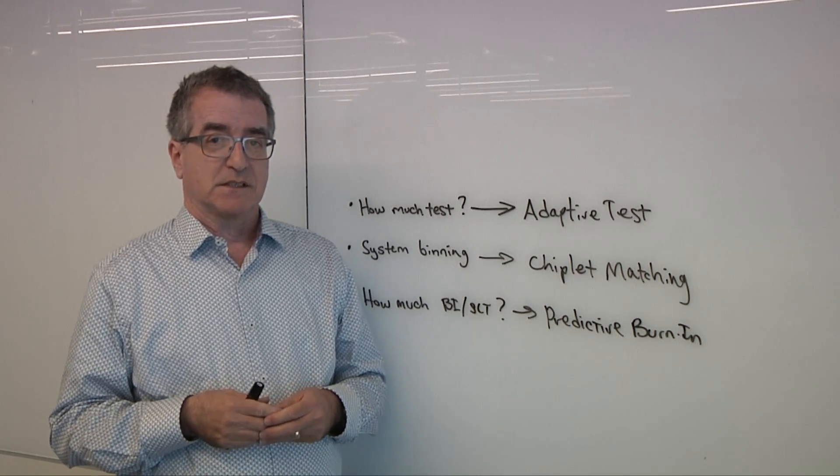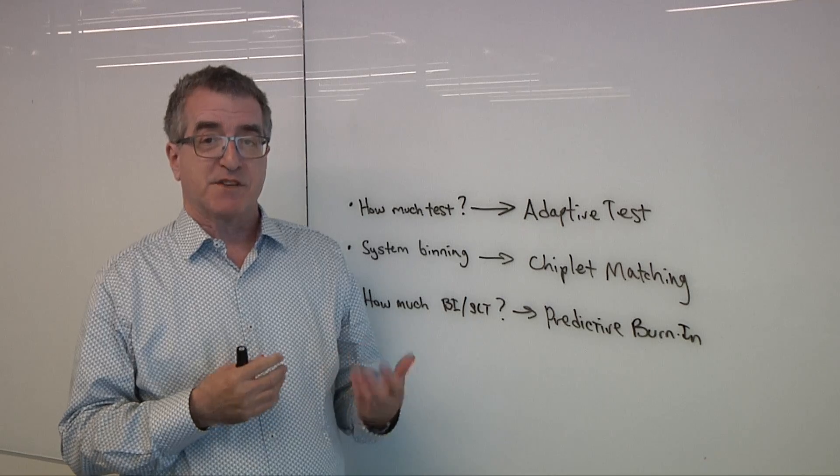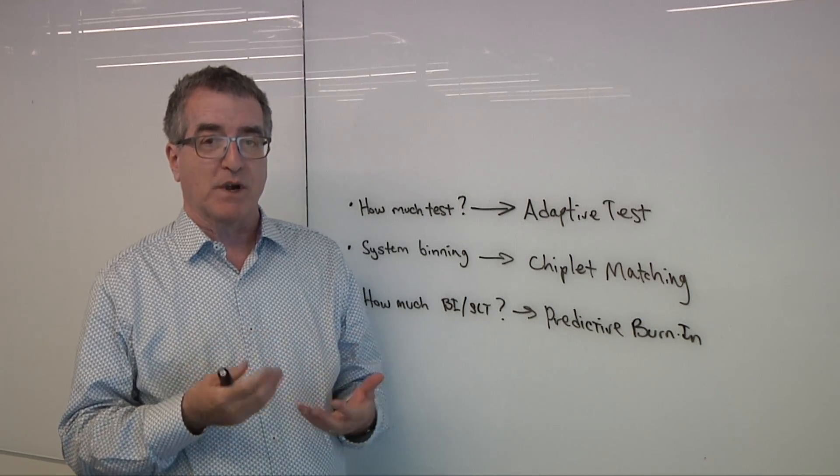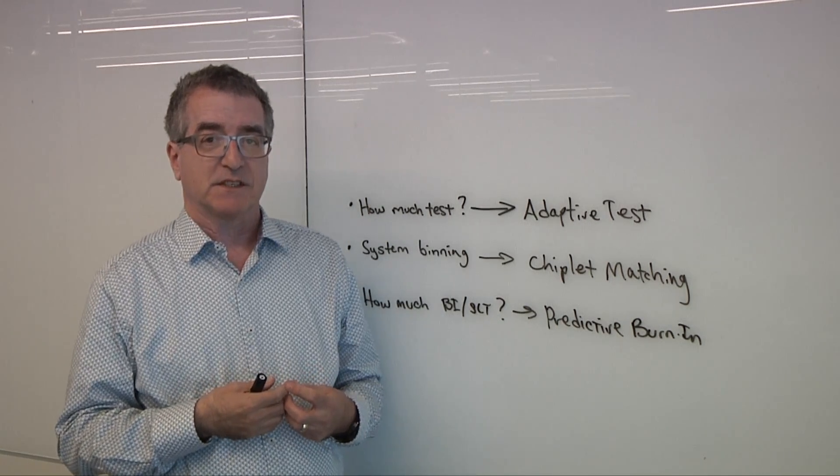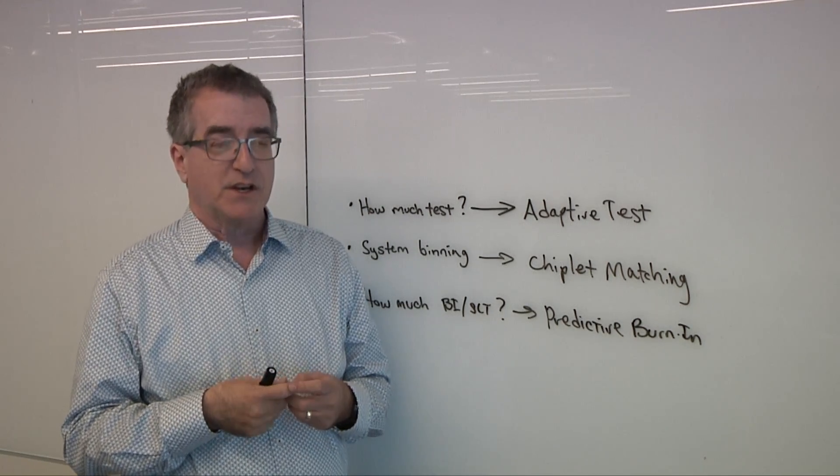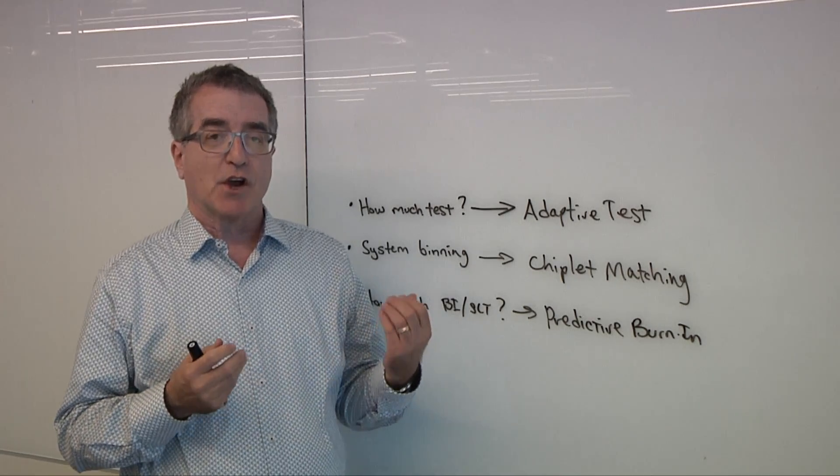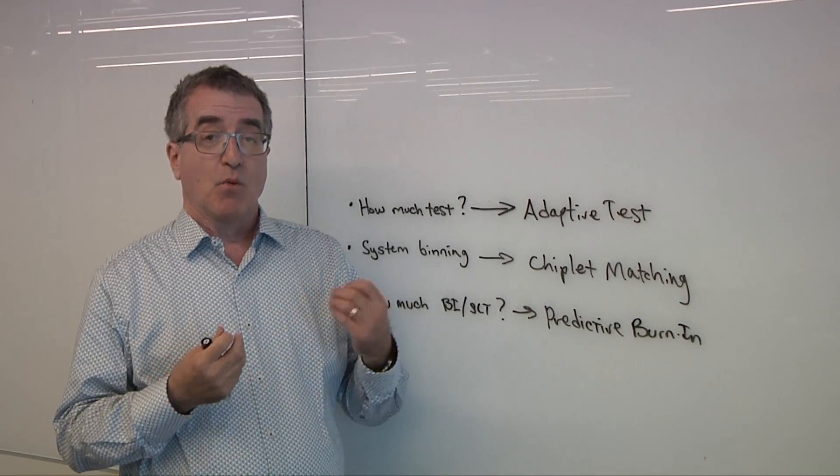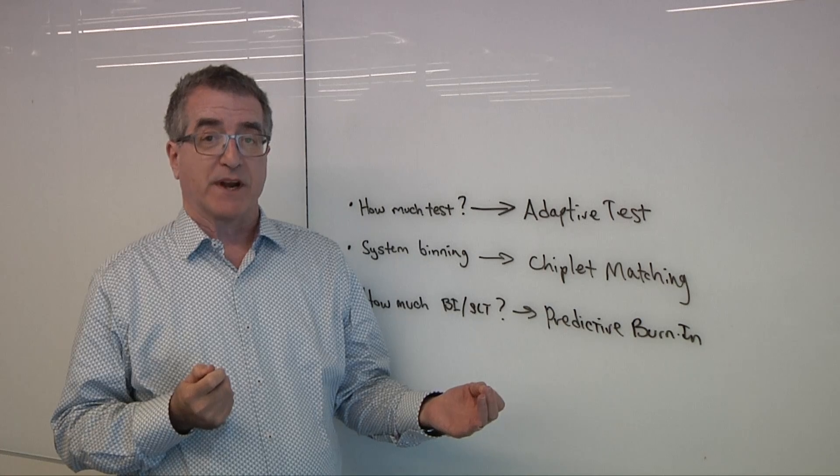How long has adaptive test been around? Adaptive test, in the way that we're describing, has been around under 10 years, and people have been working on it pretty intensely during that time. But with chiplets, it takes on a whole new meaning, right? In chiplets, it's much more important because the cost and complexity of the product has escalated. One bad chiplet will wreck the entire final product.